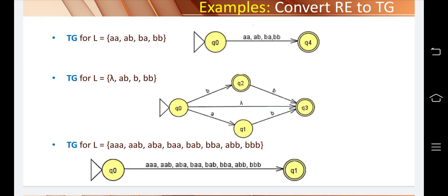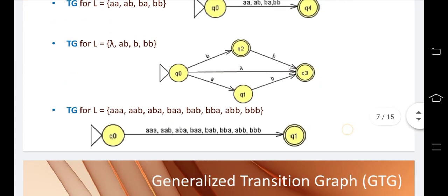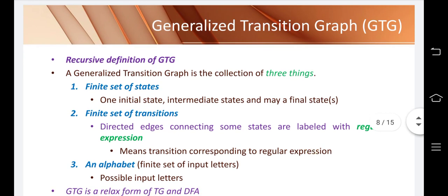These are transaction graphs for finite languages. If you create a DFA for a finite language it will be very complex, because you must create transitions for every alphabet. But in a transaction graph, you take only one transition and all strings like AA, AB, BA, BB can be placed along a path leading to Q4, which is the final state. This is why transaction graph is very simple to implement.